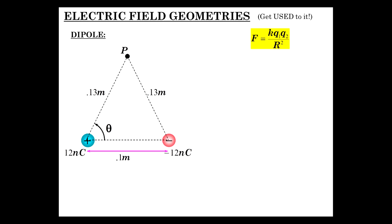Force and electric field are related as force per charge is electric field. So when you divide by Q, one of these Q's goes away, and you have KQ over R squared from a point charge.